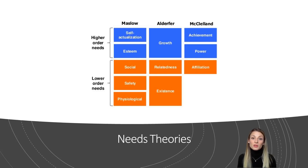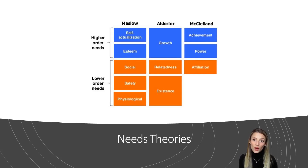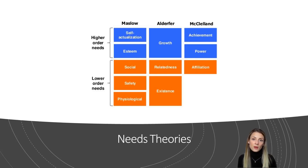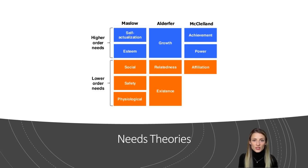Alderfer's model is similar to Maslow's model, but McClelland's includes a need that the other two do not: power. The main idea with needs theories is that trainers and managers need to find out more about what people need from their work and development opportunities, and then do their best to meet those needs.